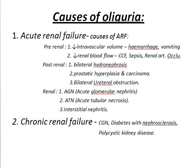Causes of oliguria. Number 1: acute renal failure. Number 2: chronic renal failure. What is the cause of acute renal failure? Pre-renal, post-renal, and renal.